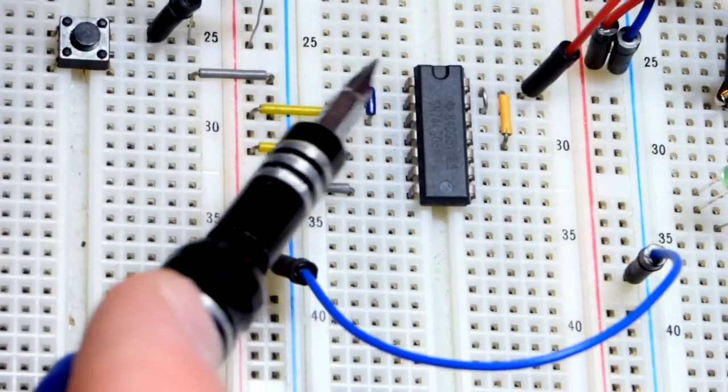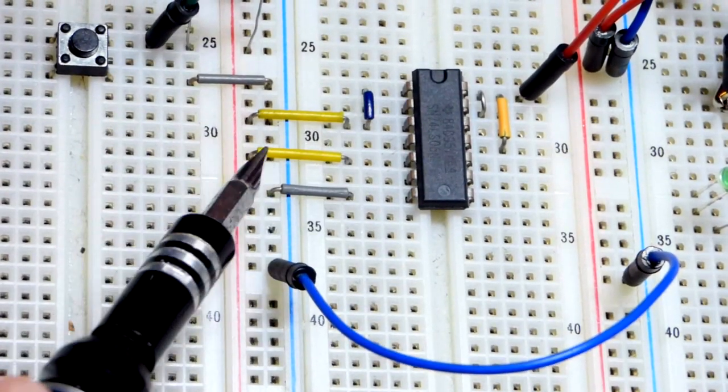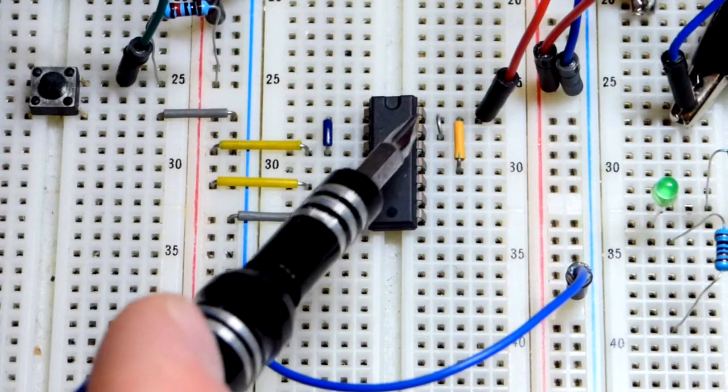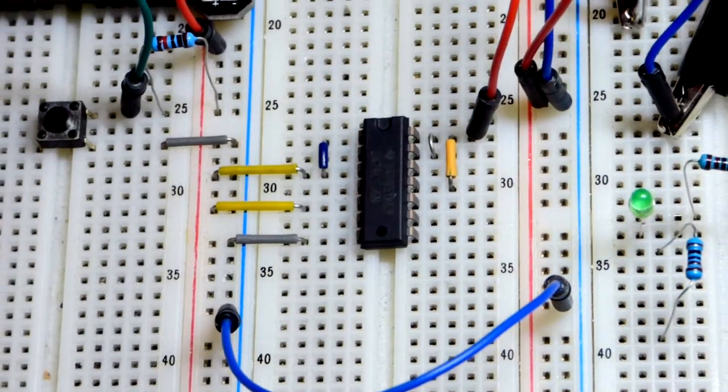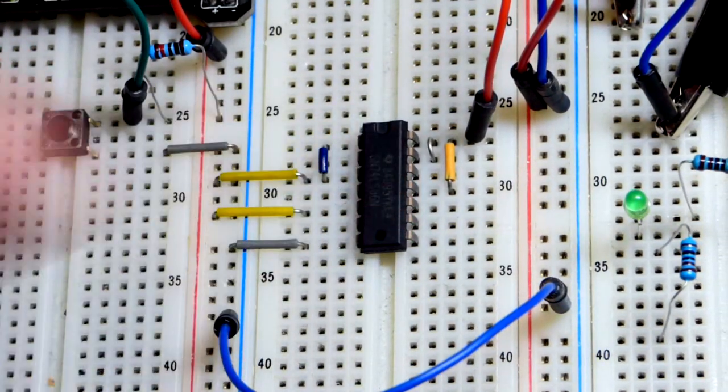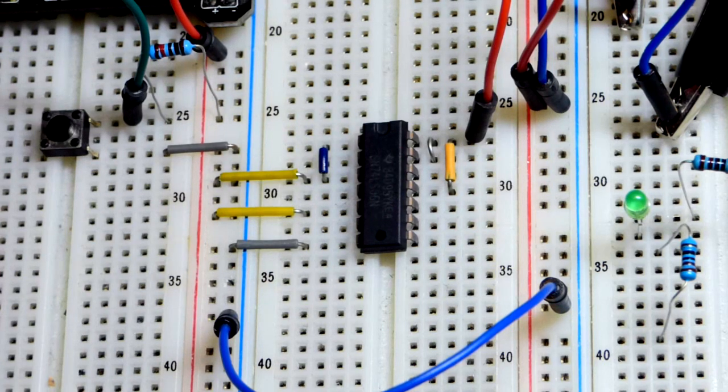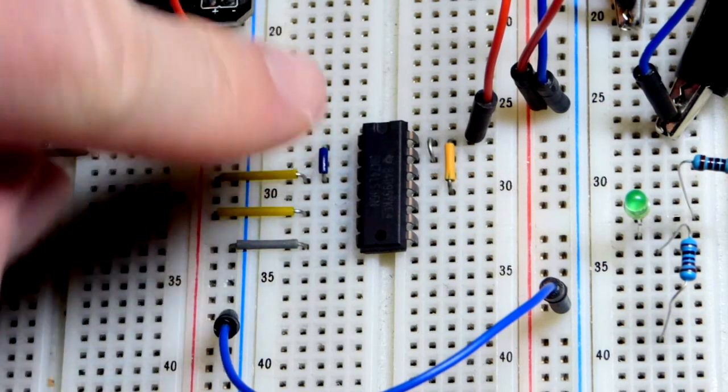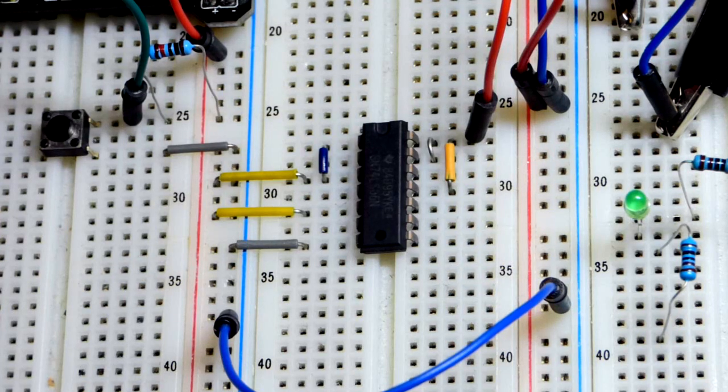And so now, all of the inputs are tied to the positive rail right there. And to be honest, we may not even need to do this for the low power Schottky, the bipolar junction transistor version of this. Maybe it's just the CMOS versions that we need to, but it shouldn't hurt anything to do this. So I'm going to do this now until I investigate that a little more.